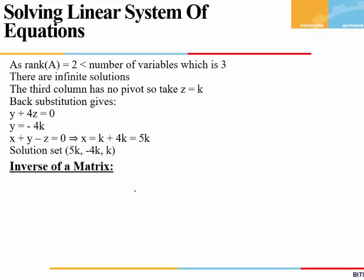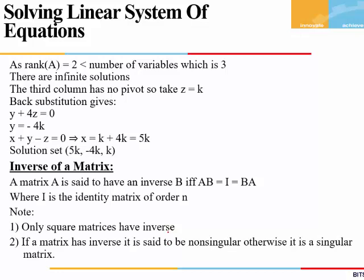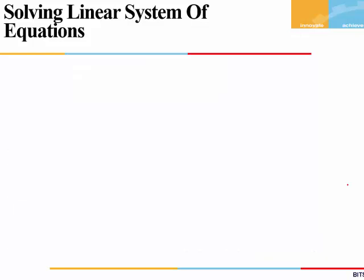Moving on to finding the inverse of a matrix. How do we define the inverse? Let's say we are given a matrix A. We say that A has an inverse B if and only if AB = I or BA = I — that is, whether we multiply A by B from the front or from the back, we should get an identity matrix. I is of order N. Only square matrices have an inverse — we have to note that. And if a matrix has an inverse, it is said to be non-singular; otherwise, it is called a singular matrix.